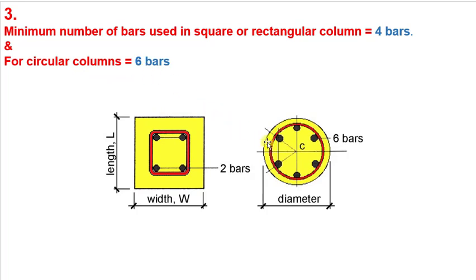For circular columns, the minimum number of bars is 6. If you have a circular column, you must use at least 6 bars as the minimum — you can't go below 6, you can't use 5 or 4 bars in a circular column. This is the type of question usually asked by interviewers during an interview.